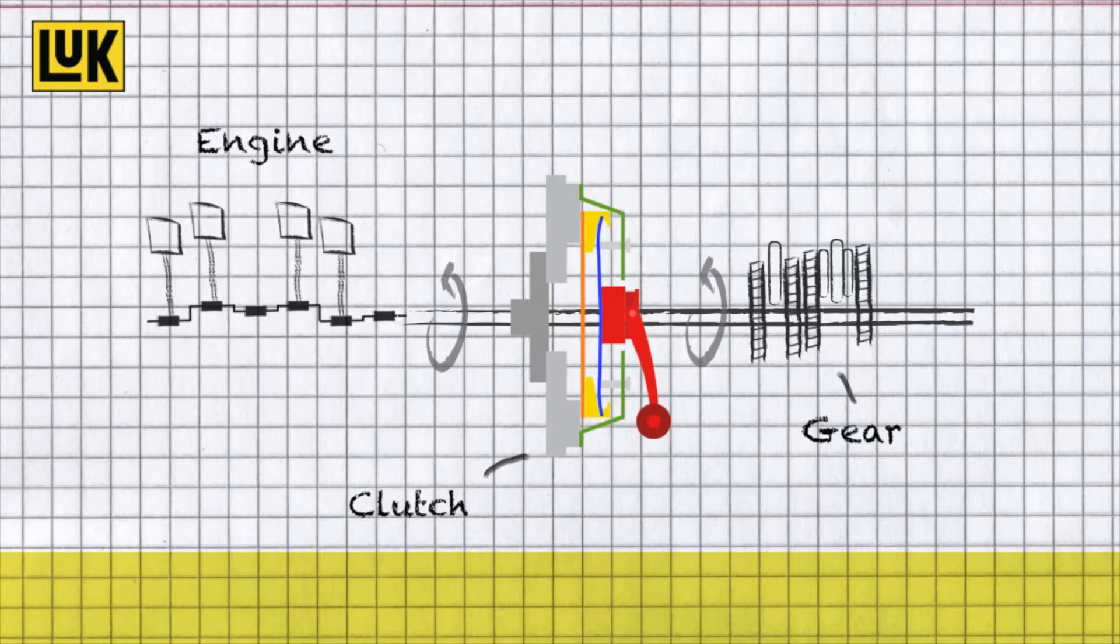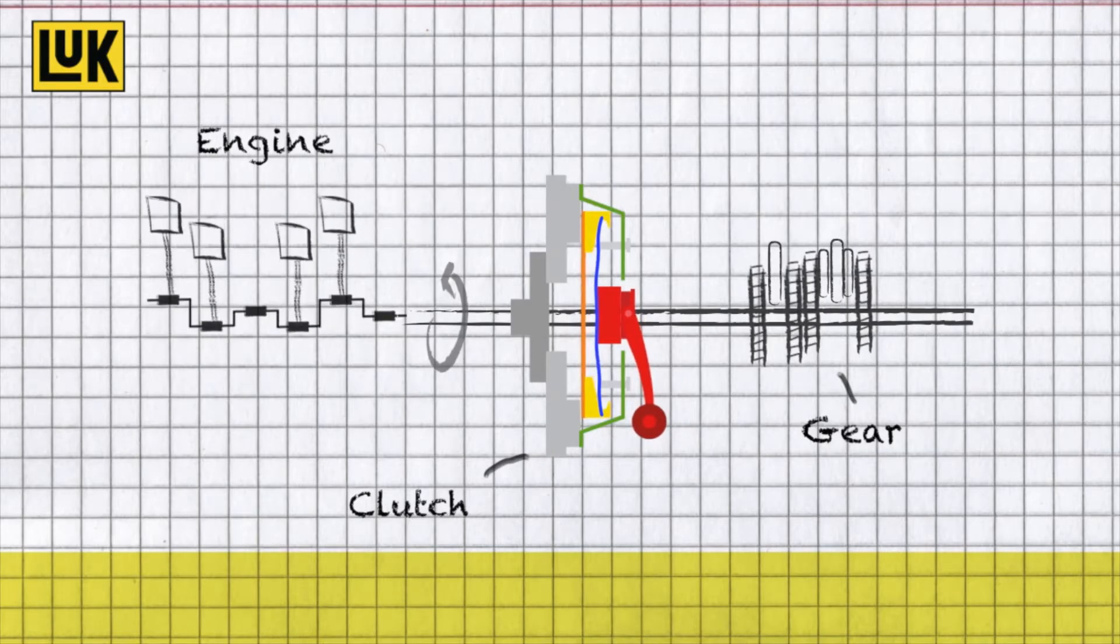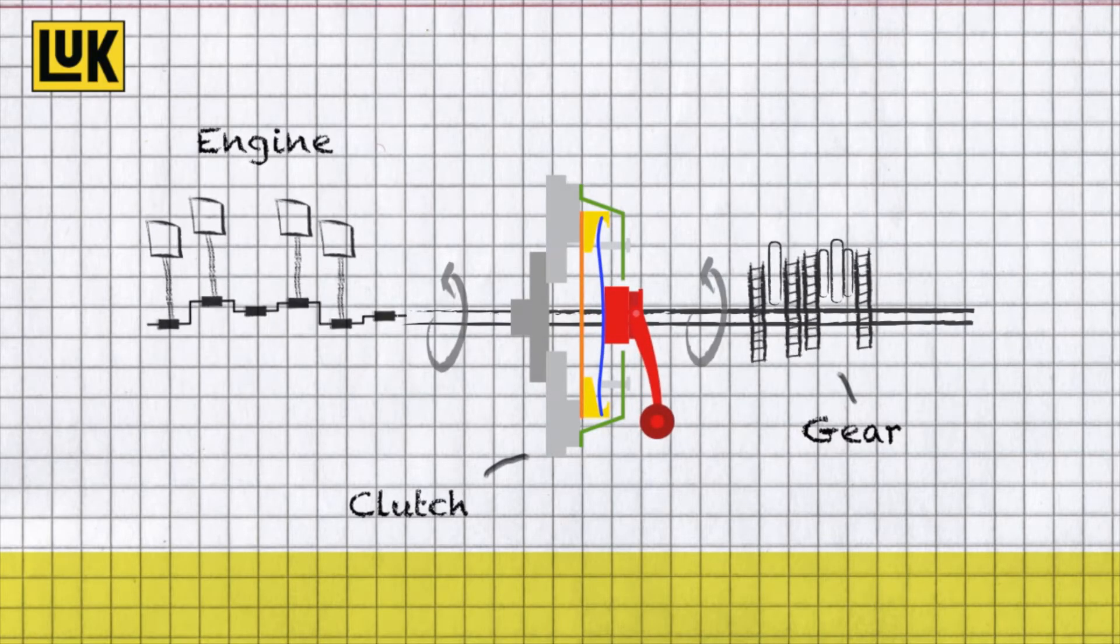An engaged clutch interrupts the power to the transmission, while with a disengaged clutch the power transfer occurs.